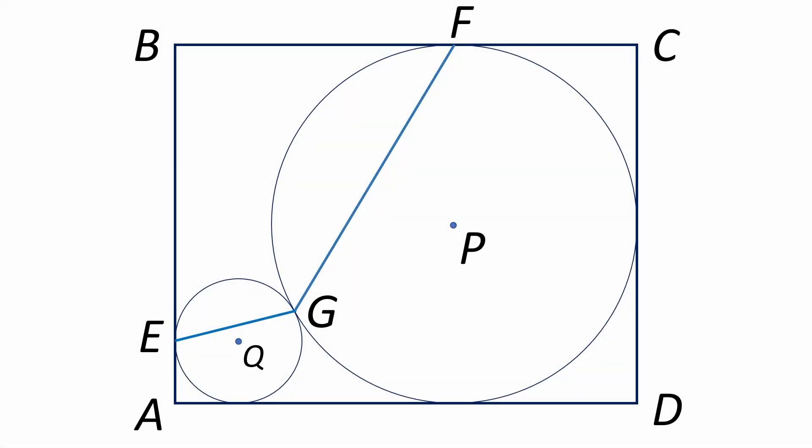As is customary when solving geometry problems, we'll first draw in a few auxiliary lines. I'll connect E to the center of the small circle, which is point Q.